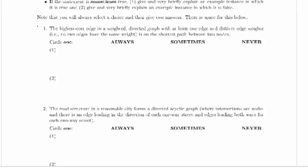We're doing true or false, or possibly sometimes true, with explanations. The highest cost edge in a weighted directed graph with at least one edge and distinct edge weights, i.e. no two edges have the same weight, is on the shortest path between two nodes.